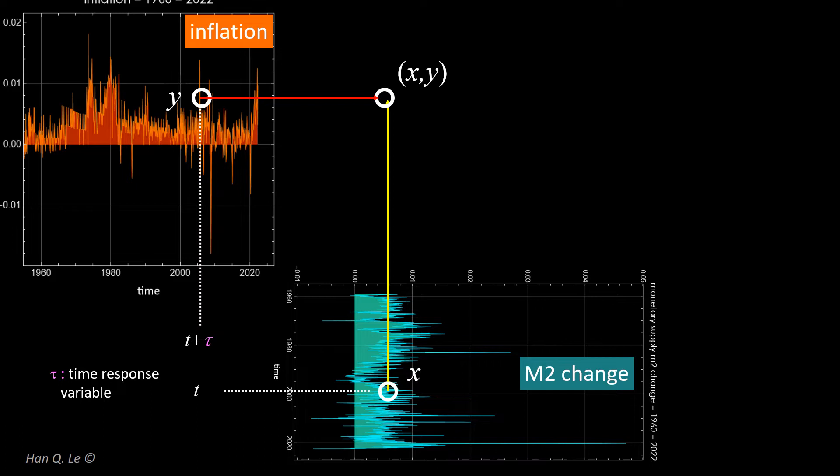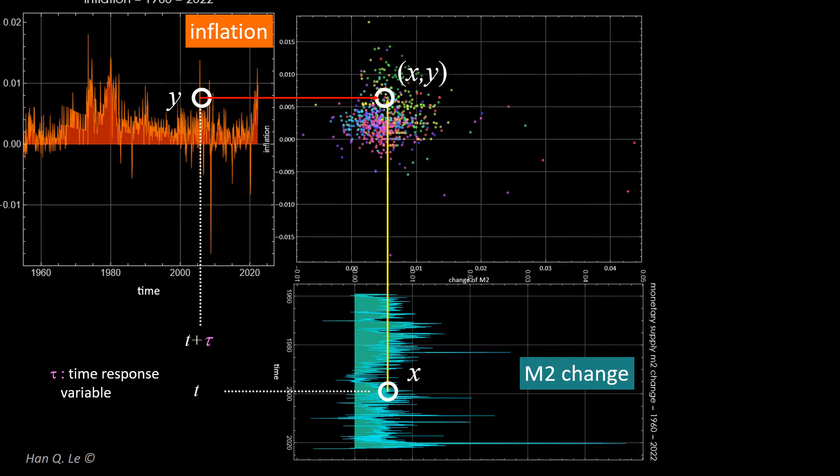Collection of all similar points form a scatter graph of M2 change, which is plotted along the x-axis, versus inflation, which is plotted along the y-axis. If the two variables are correlated, the scatter graph, as shown, can be analyzed for the statistical properties of correlated variables.